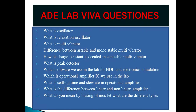A monostable multivibrator — mono means one — has at least one stable state. When you trigger it, it will move to the unstable state and remain there for a certain time depending on the RC constant, after which it will return to the stable state. That is called a monostable multivibrator. A bistable multivibrator, for example a flip-flop, has two stable states.